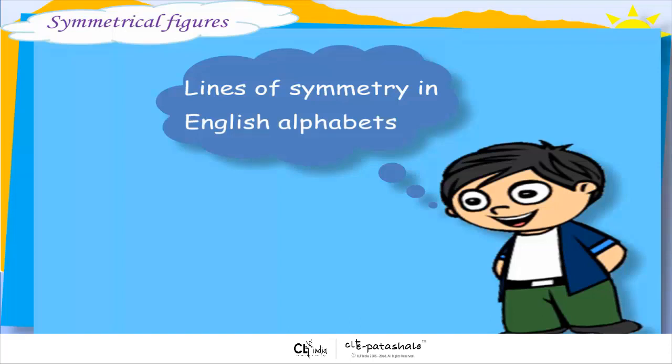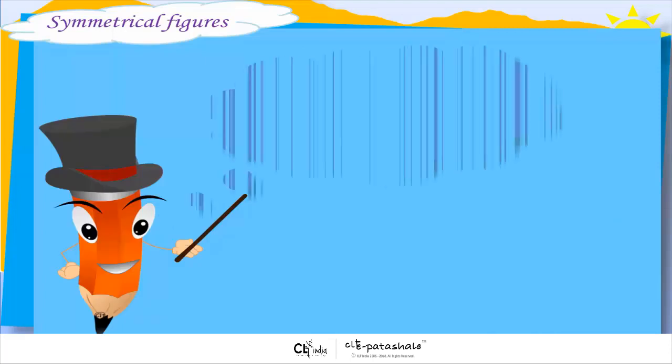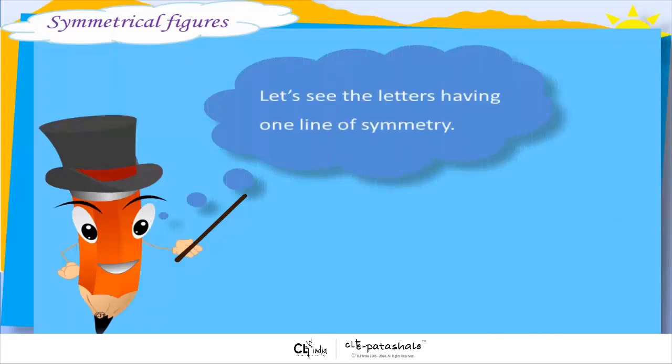Lines of symmetry in English alphabets. Let us see the letters having one line of symmetry.